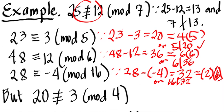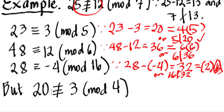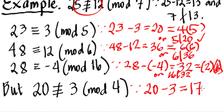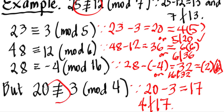Now let's look at an example where 20 is NOT congruent to 3 mod 4. That's because 20 minus 3 equals 17. Since 17 is a prime number, 4 is not a factor of 17, so 4 does not divide 17. Therefore 20 is incongruent to 3 modulo 4.